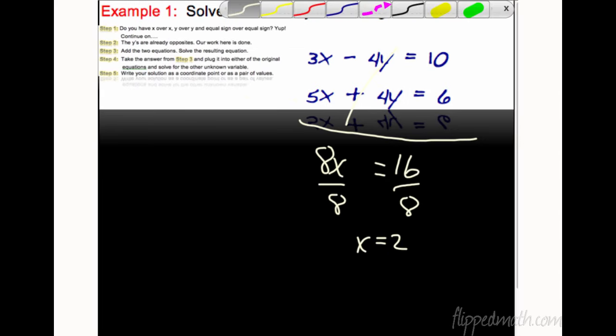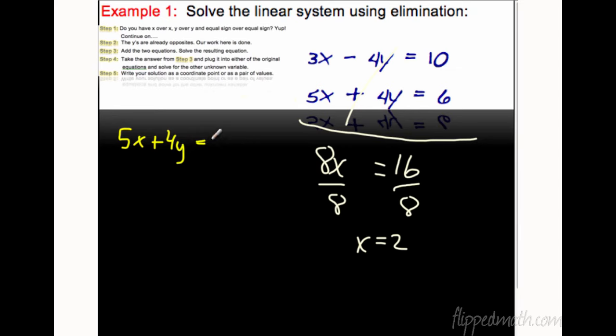Now we have to do the next part, which you remember. You pick either equation. I'll just pick the bottom equation because it doesn't have any negatives in it. But either equation will work. I'm going to rewrite it. 5x plus 4y equals 6. Now what? Just like substitution. You found that x equals 2. We're going to plug it into the x right there. So 5 times 2 and then the rest of the equation.